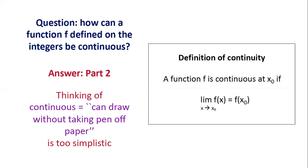With this definition, in the case where f is defined only on the integers, a function defined only on the integers is in fact automatically continuous. Essentially, if you have x₀ to be an integer, there are actually no other integers which are close to x₀, so f(x₀) can be whatever it wants.